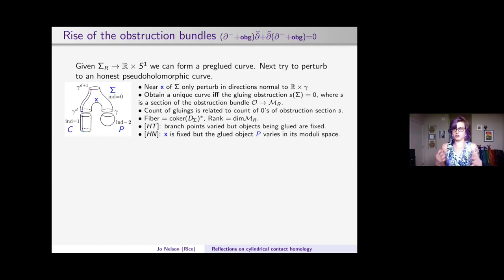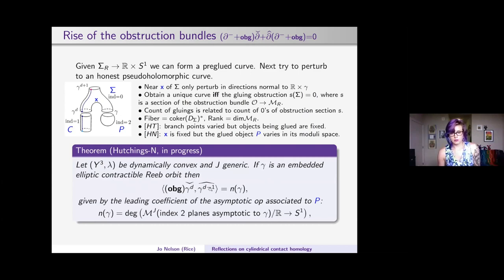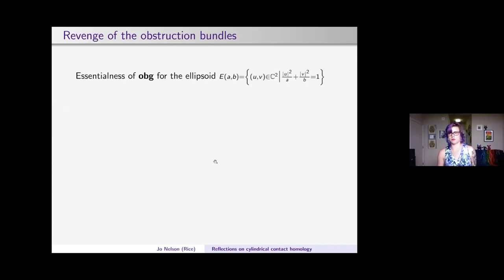The fiber of this obstruction bundle is given by the dual of the cokernel of the deformation operator — encoding perturbation only in directions normal to ℝ × γ. The rank equals the dimension of the moduli space of branched covers. The difference from Hutchings-Taubes (ECH d² = 0): in their construction branch points varied but the glued objects were fixed, whereas here the branch point is fixed and the plane p varies within the moduli space of planes.